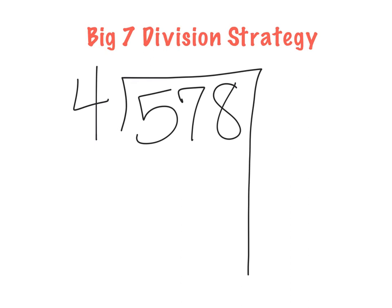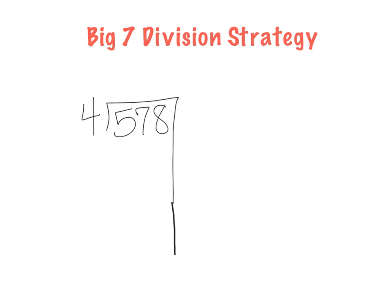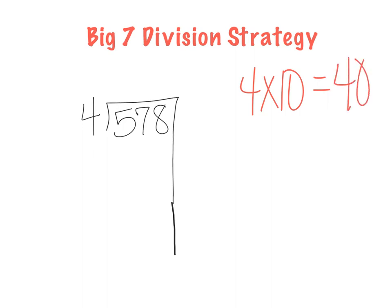With the Big 7 strategy, you want to pull big chunks of the number out at one time. Remembering that when I multiply anything by 10 or by 100, I have the same digit and I'm just adding zeros. I have my 4, and I know that 4 times 10 gives me 40. But I want to go bigger than 40 because I have a 3-digit dividend. So instead of doing 4 times 10, I should multiply by 100. And what is 4 times 100? Good — 400.